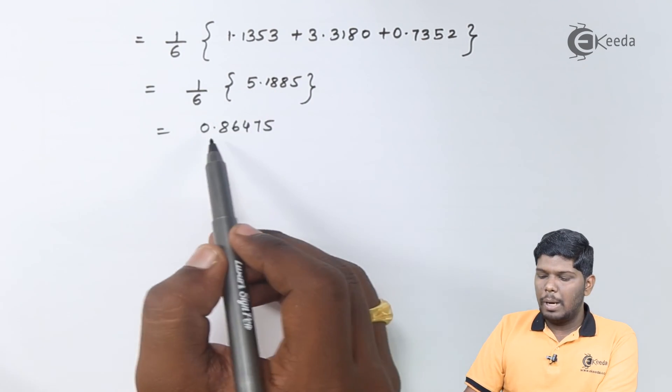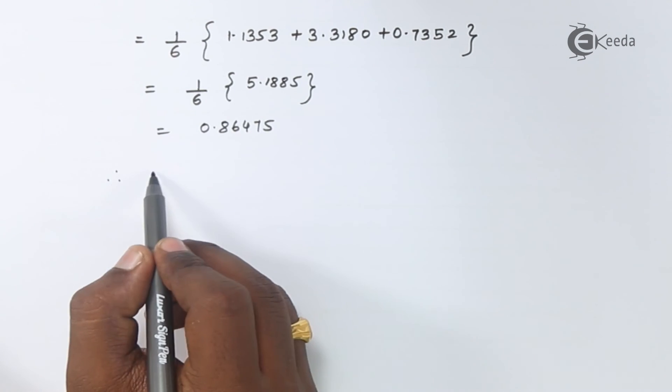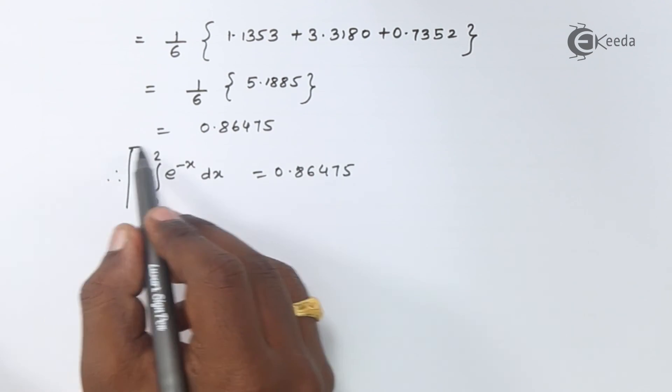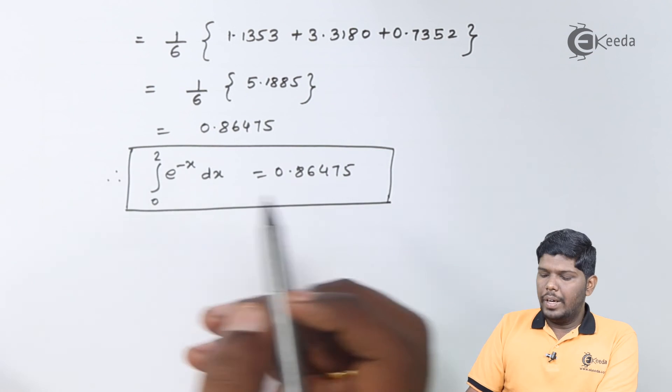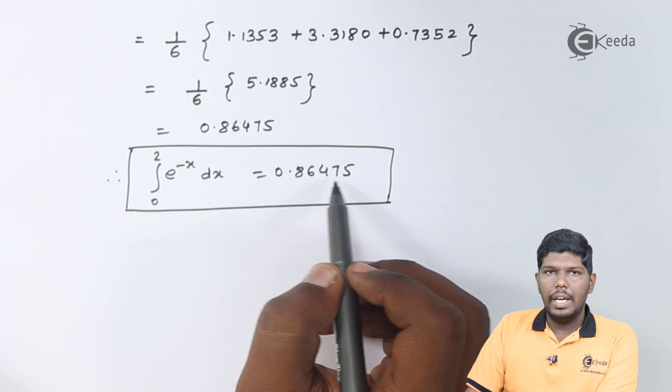After dividing by 6, whose approximate answer will be 0.86475. Therefore, the final answer will be integral 0 to 2 e^(-x) dx equals 0.86475.